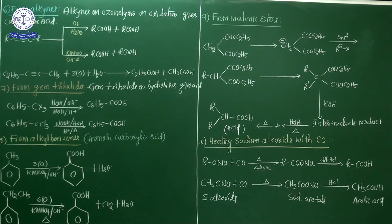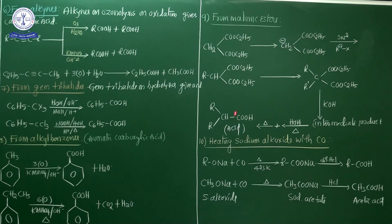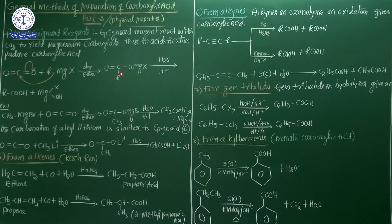These are the general preparation methods of carboxylic acid from different categories: Grignard reagent, alkenes, alkynes, gem trihalides, alcohol, acid anhydrides, amides, etc. I have successfully completed the entire preparation methods of carboxylic acid. Now we are going to discuss the physical properties of carboxylic acid. Unfortunately I did not write the physical properties on the board, so listen very carefully.